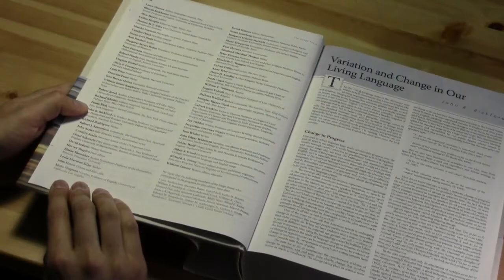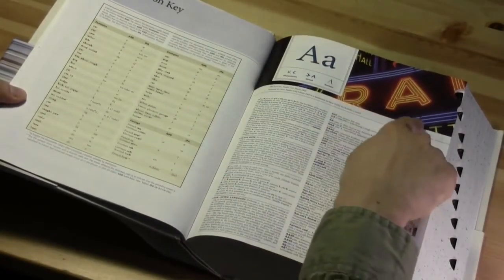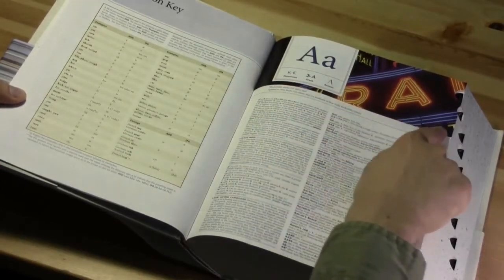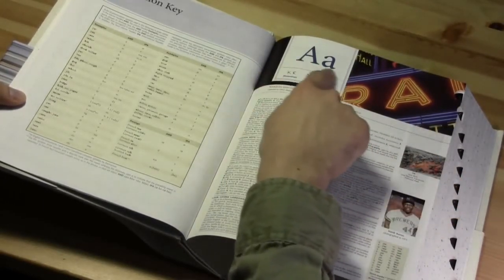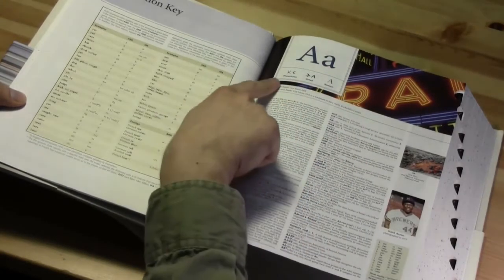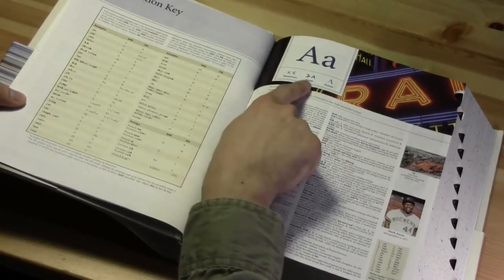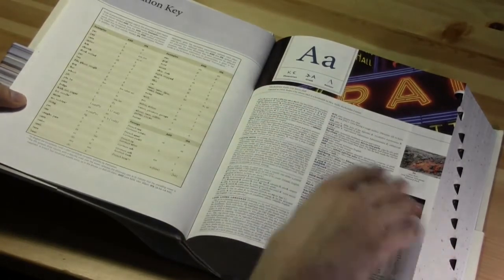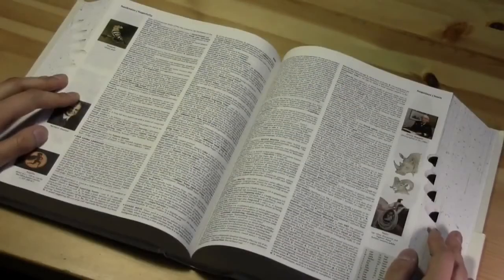One of the nice features is at the beginning of each letter we have this nice graphic at the top which gives us not only the sort of kind of modern typeface version of the letter, but the historical development of the letters themselves. So Phoenician, Greek, and then the Roman form. You can see how the letters themselves have evolved over time. That's a nice feature.